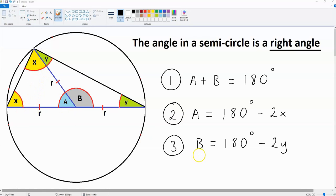Now what is b? b is going to be 180 degrees minus 2y. Because once again, there are 180 degrees inside a triangle. And over here, inside the triangle to the right, we have two y's. So we are going to subtract 2y from 180 degrees.